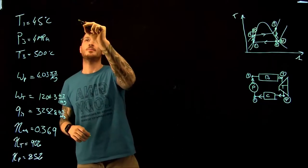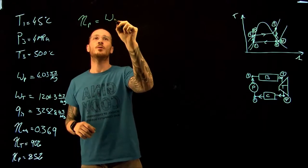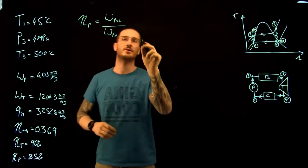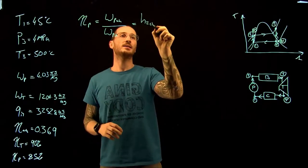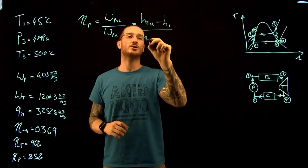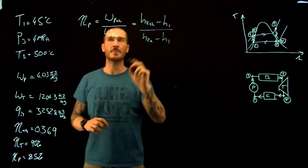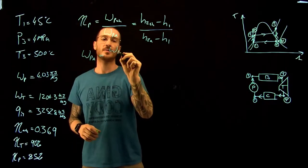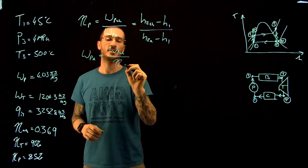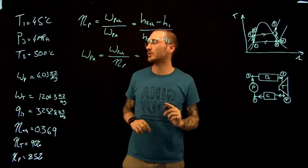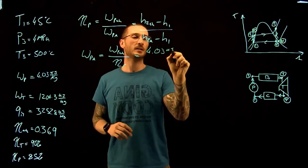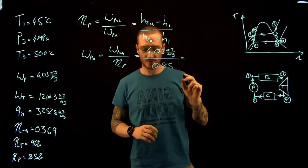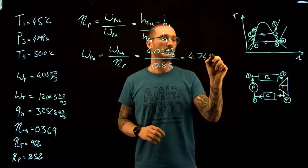Firstly, we're going to look at the work of the pump. The efficiency of the pump is equal to the work of the pump theoretically divided by the work of the pump in actuality. This is equal to H2 theoretically minus H1 over H2 actual minus H1. The work of the pump actually is equal to the work of the pump theoretically divided by the efficiency of the pump, which gives us 4.03 kilojoules per kilogram divided by 0.85, giving a pump work of 4.74 kilojoules per kilogram.